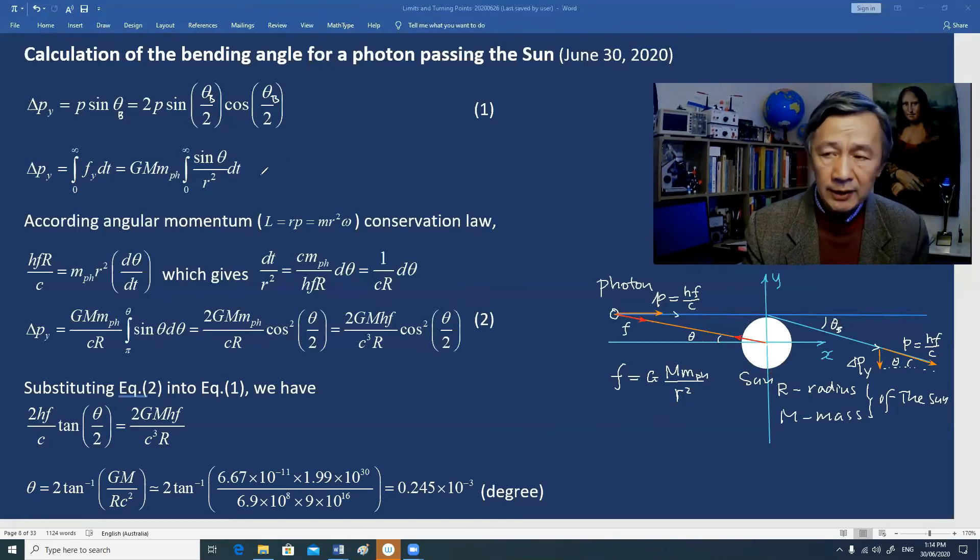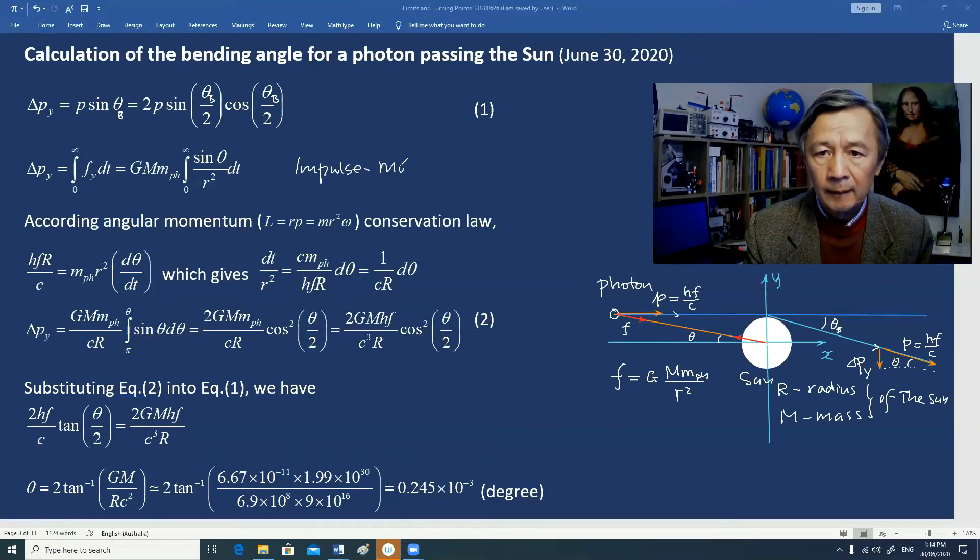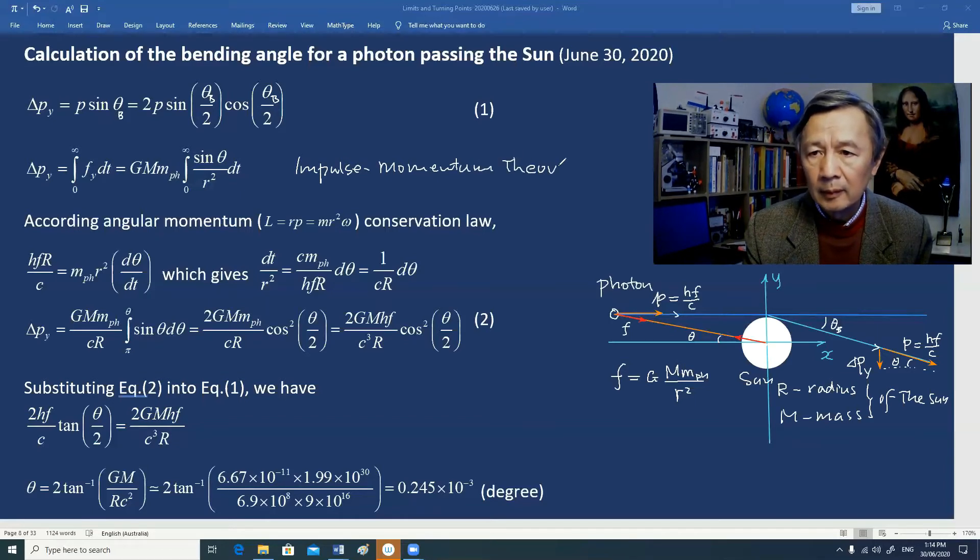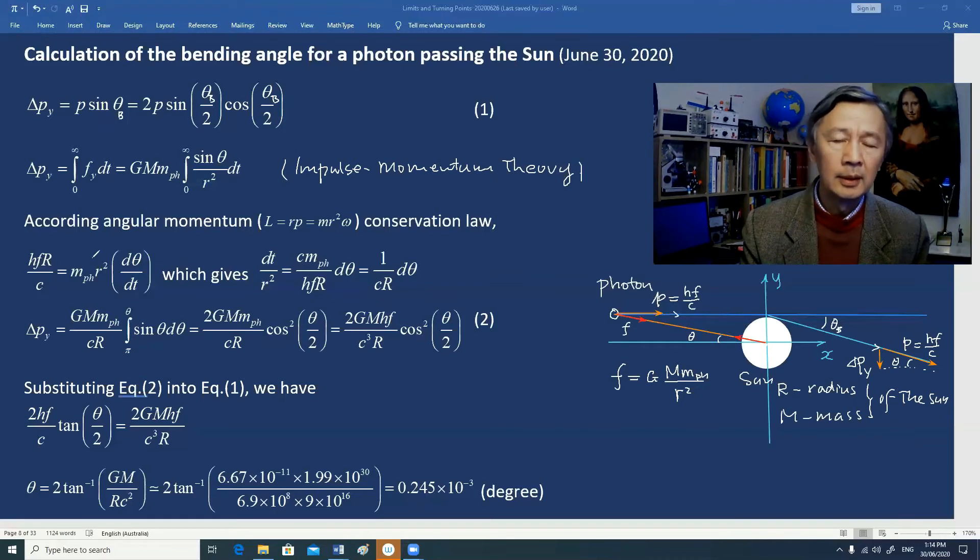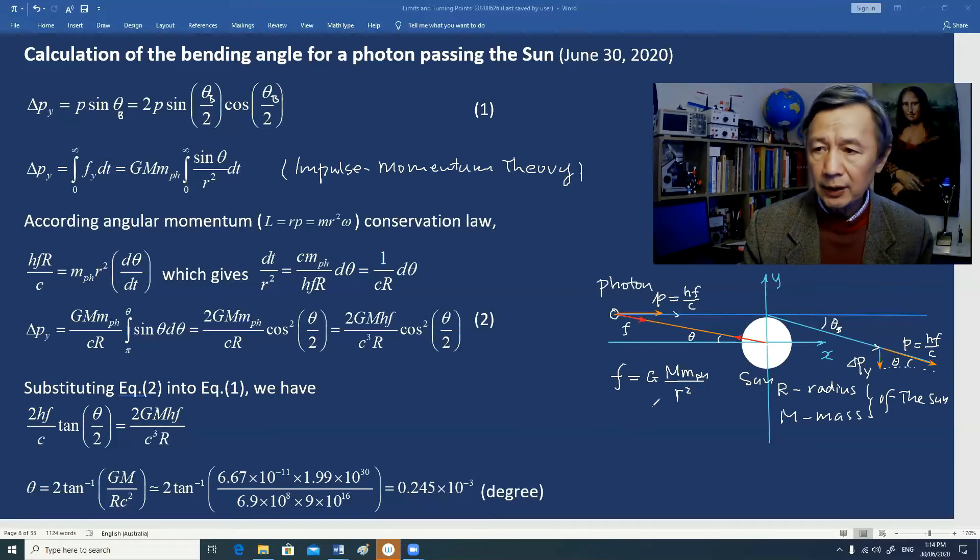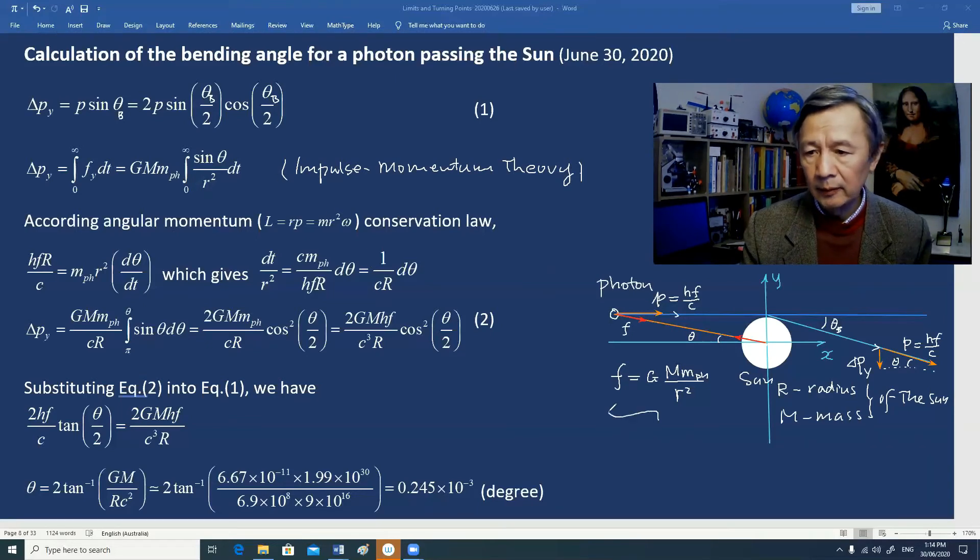The second equation is derived from what we call the impulse momentum theory. Another formula we use is Newton's universal gravitational law.